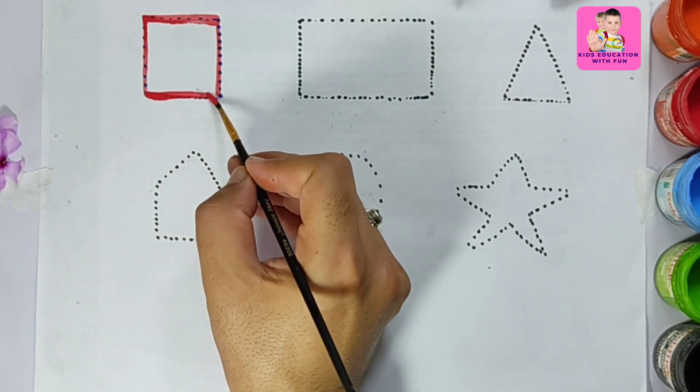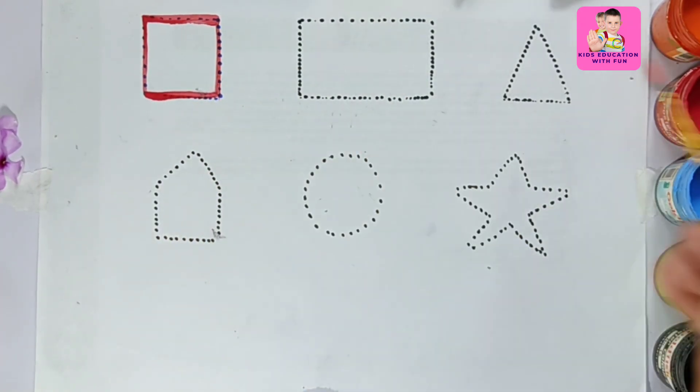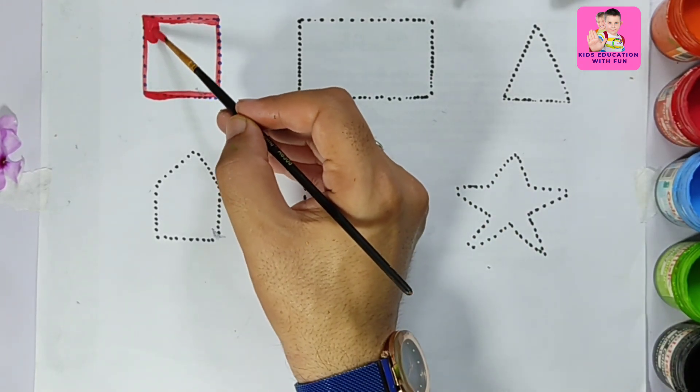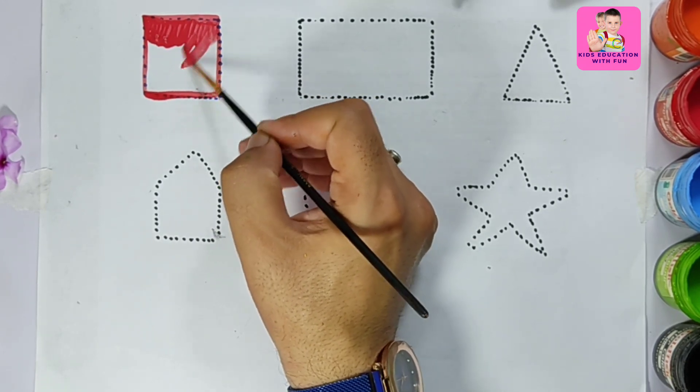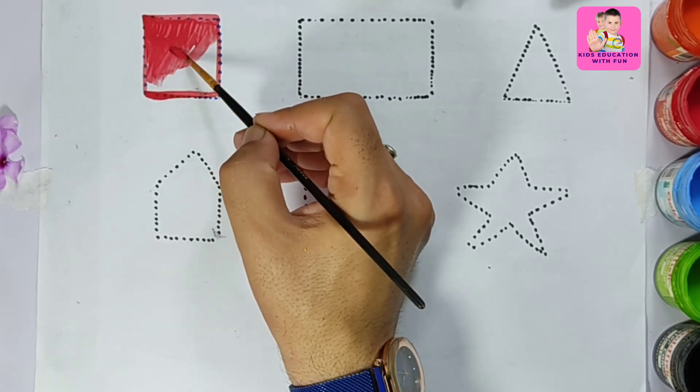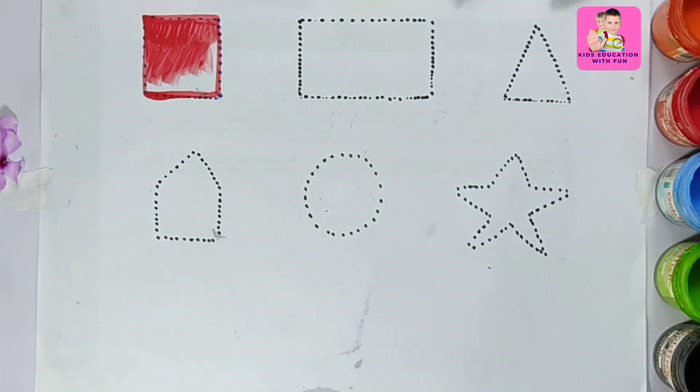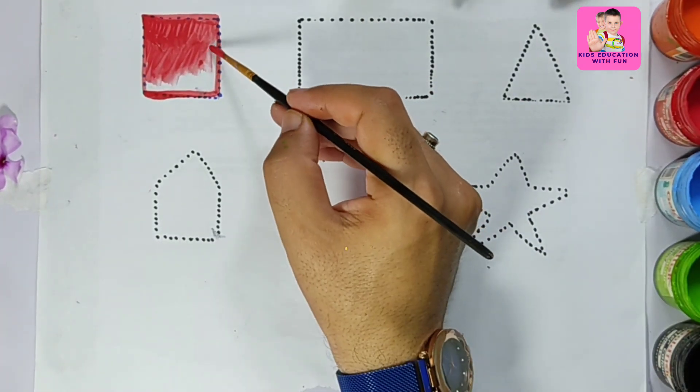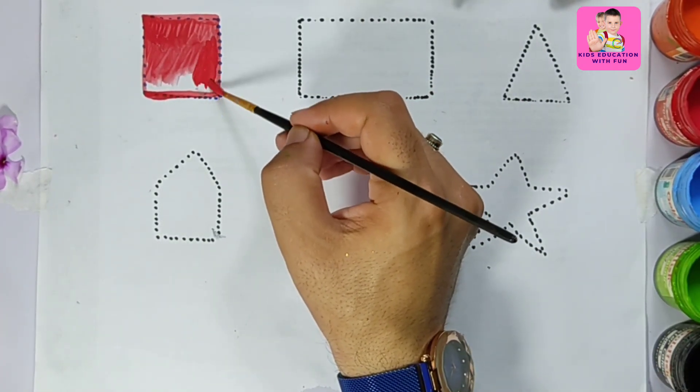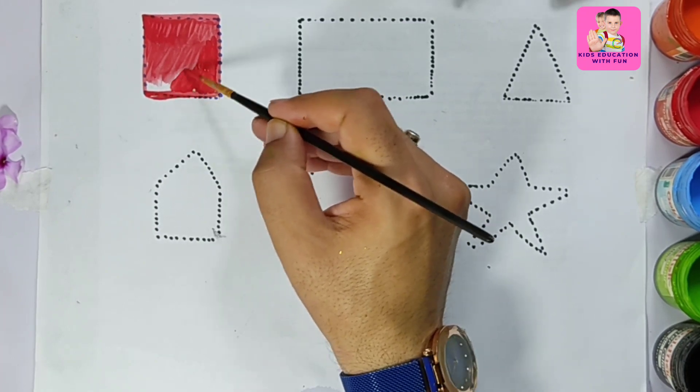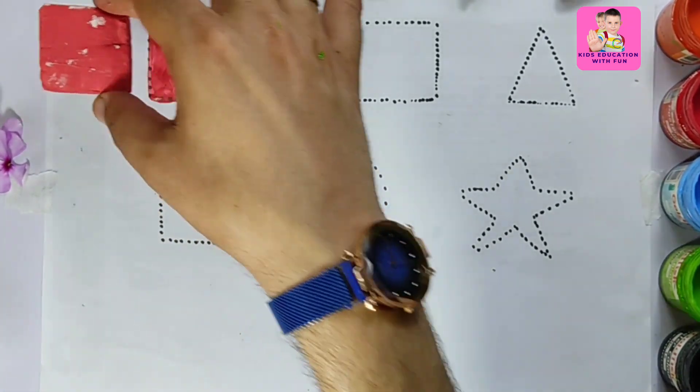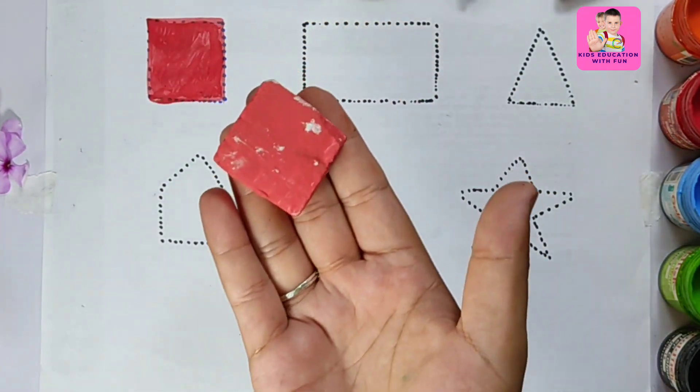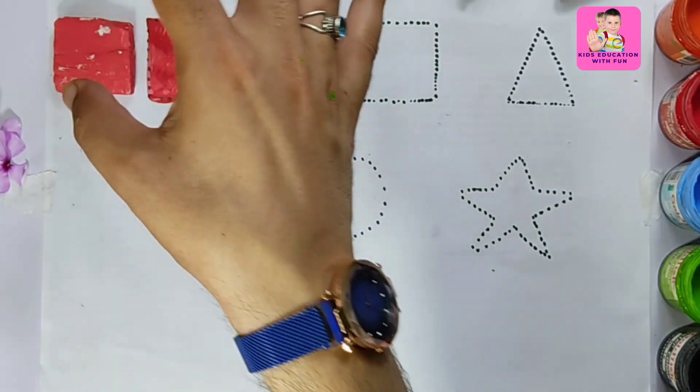Now we will color it. Coloring the square with red color. Wow, what a beautiful square! You can see this is a red square.